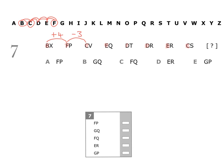Then we have E. To get from C to E, we need to move on two letters. Then we have D. To get from E to D, we need to move back one letter. And then D to D — that's not moving on or back any letters. Then D to E, we need to move on one letter. Then E to C, we need to move back two letters.